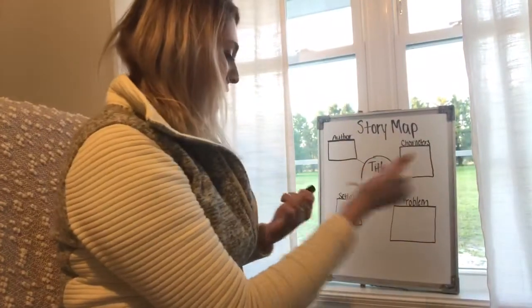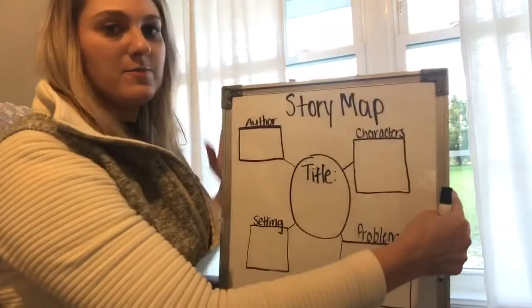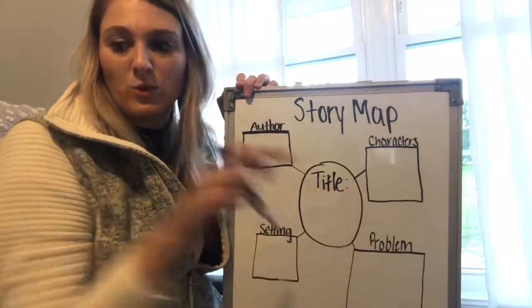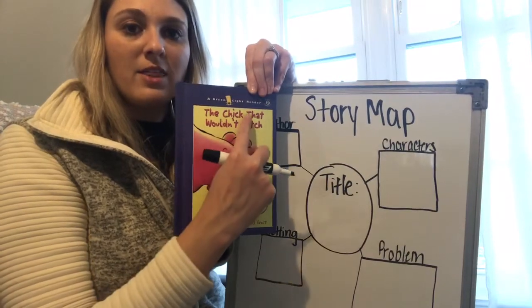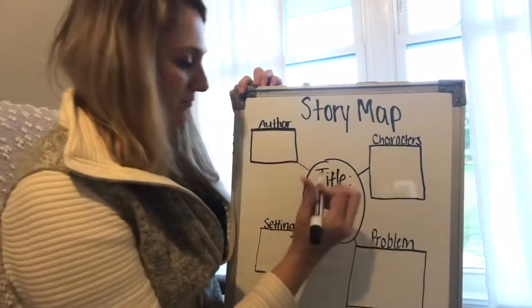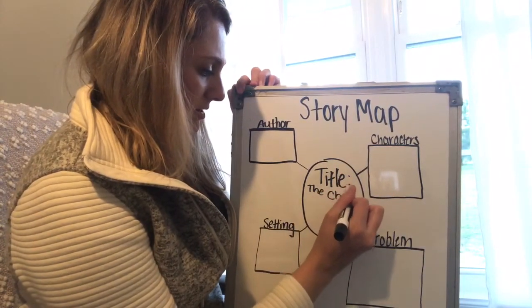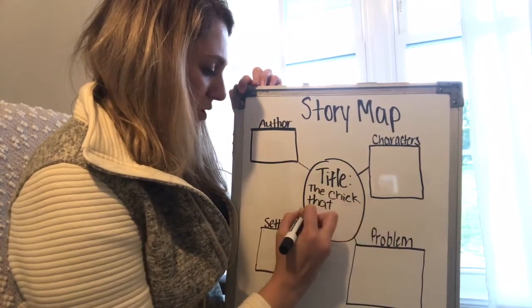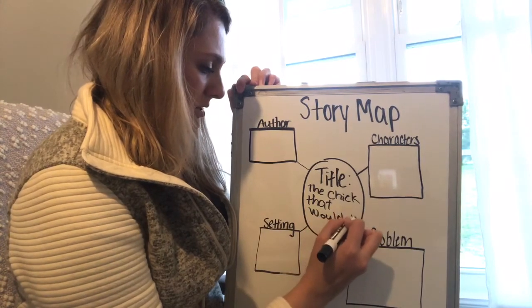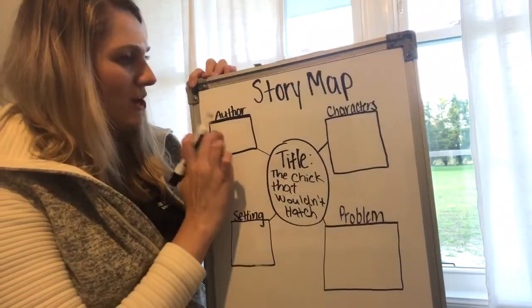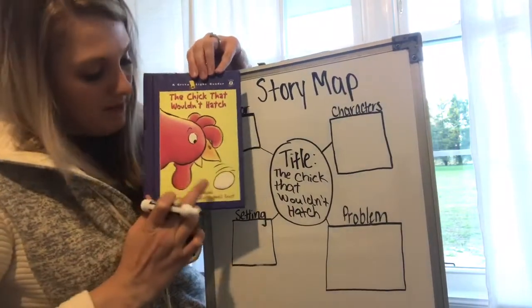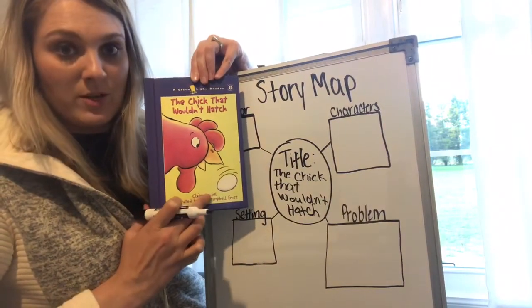I need your help filling out my graphic organizer, which is just a fancy word for a chart. The first thing I need to know is the name or title of the story. If we look back at the story, we can find the title right at the top — and it was called The Chick That Wouldn't Hatch. I'm going to write that. The next thing I need is the author. The author is Claire Daniel — we know the author is written down here.